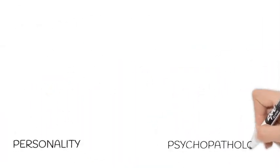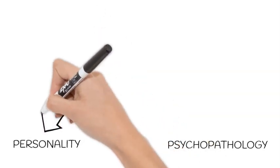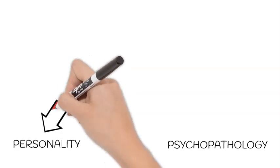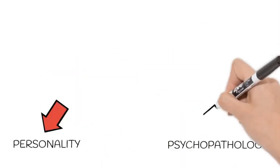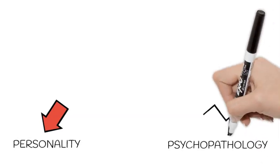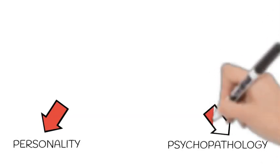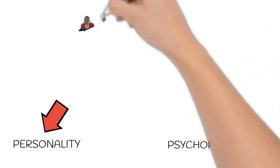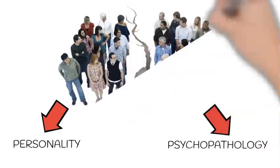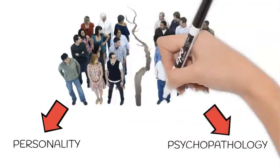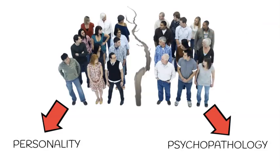Another thing we should understand as an overview of personality psychology is that personality is closely intertwined with psychopathology. In order to understand abnormal personality functioning, we must first understand normal personality functioning. However, for many decades the study of personality and psychopathology was split and progressed without communicating with each other. Nowadays there is growing realization of the connection between personality and psychopathology.